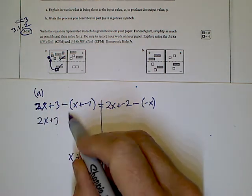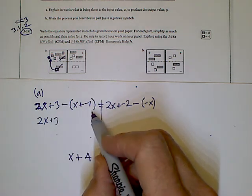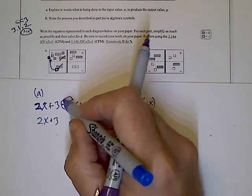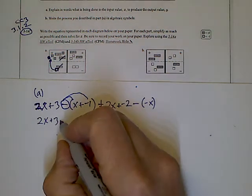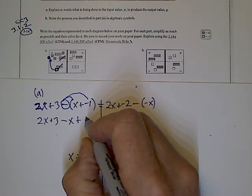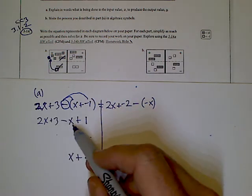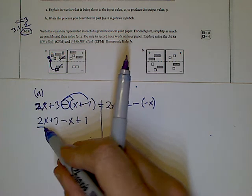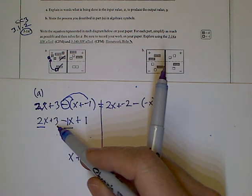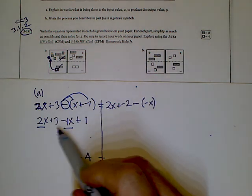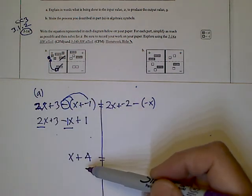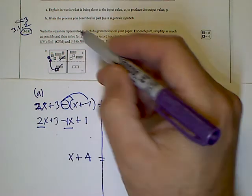Algebraically, we have 2x plus 3, minus the quantity (x plus negative one). Distributing that minus sign gives minus x, and then minus a negative one becomes a positive one. Combining like terms: 2x minus x gives x, and 3 plus 1 gives 4. So the left side simplifies to x plus 4 — matching what the tiles showed.